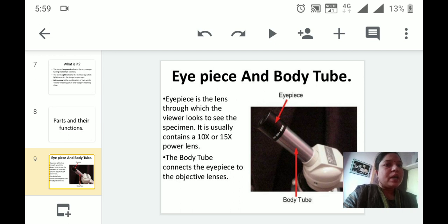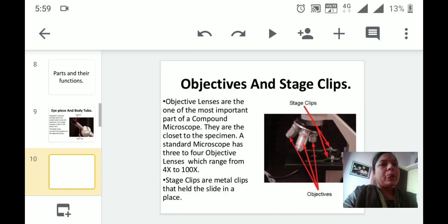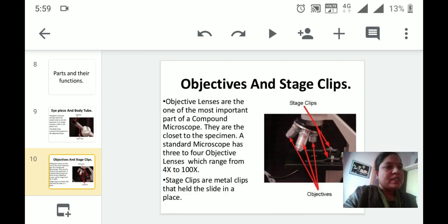Different parts and functions: The eyepiece is a lens through which viewers look to see the specimen. It usually contains 10x or 15x power lenses. In the biology laboratory, we have the 10x eyepiece. The body tube always connects the eyepiece to the objective lens.